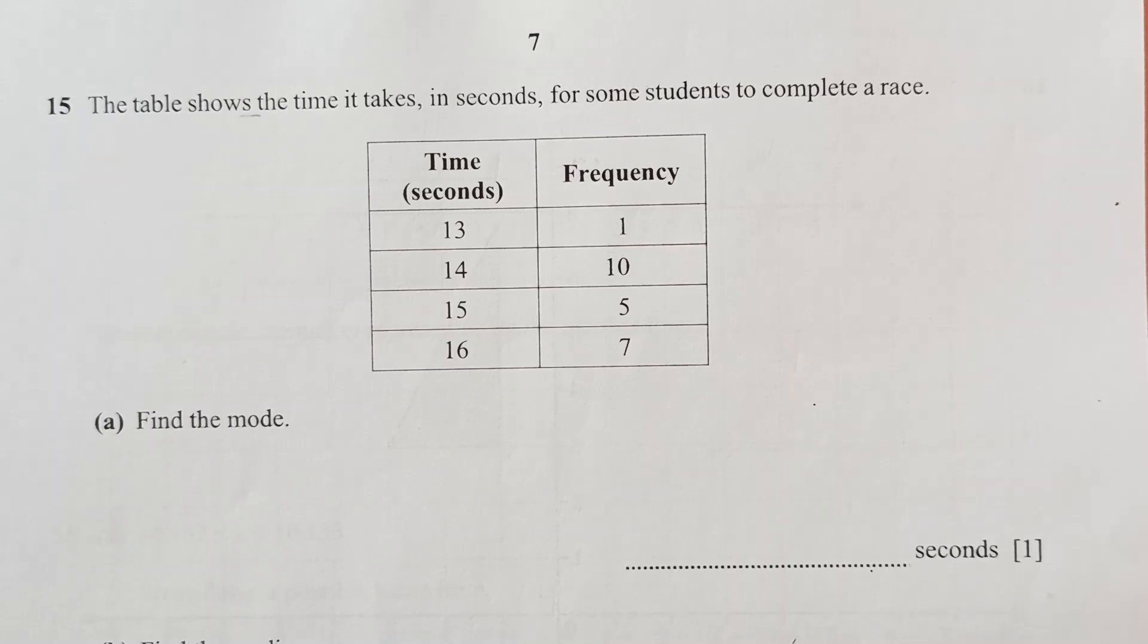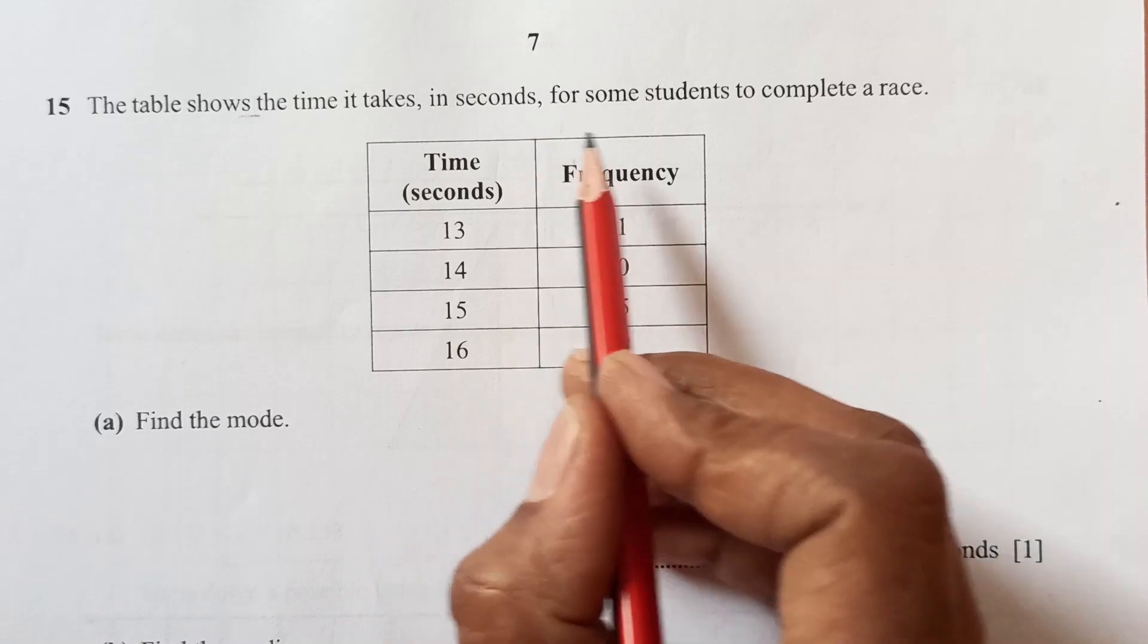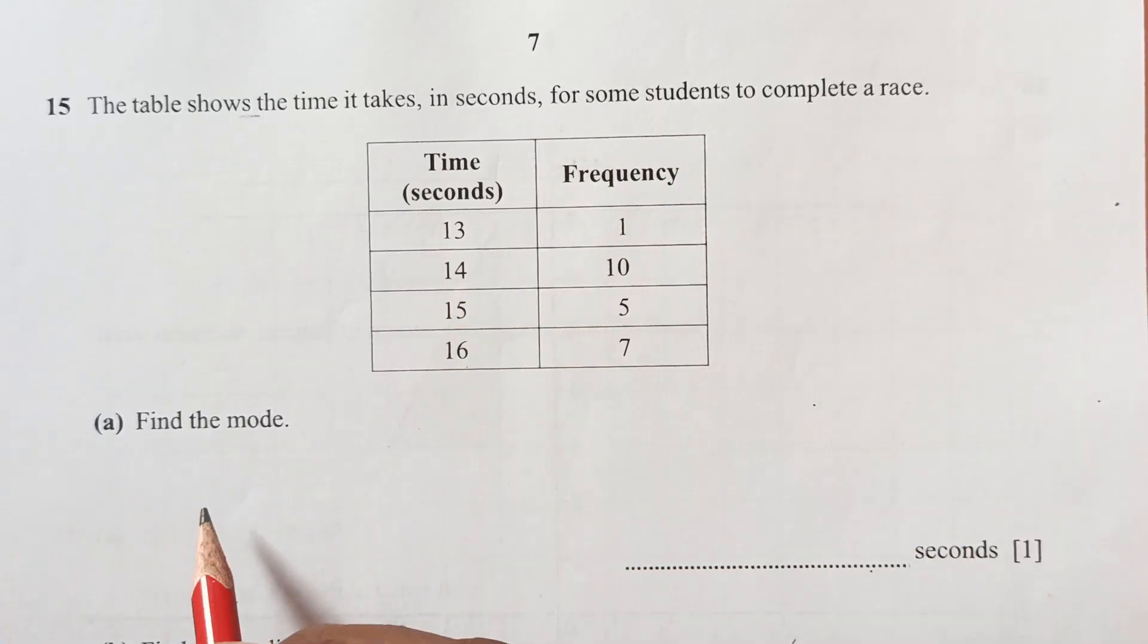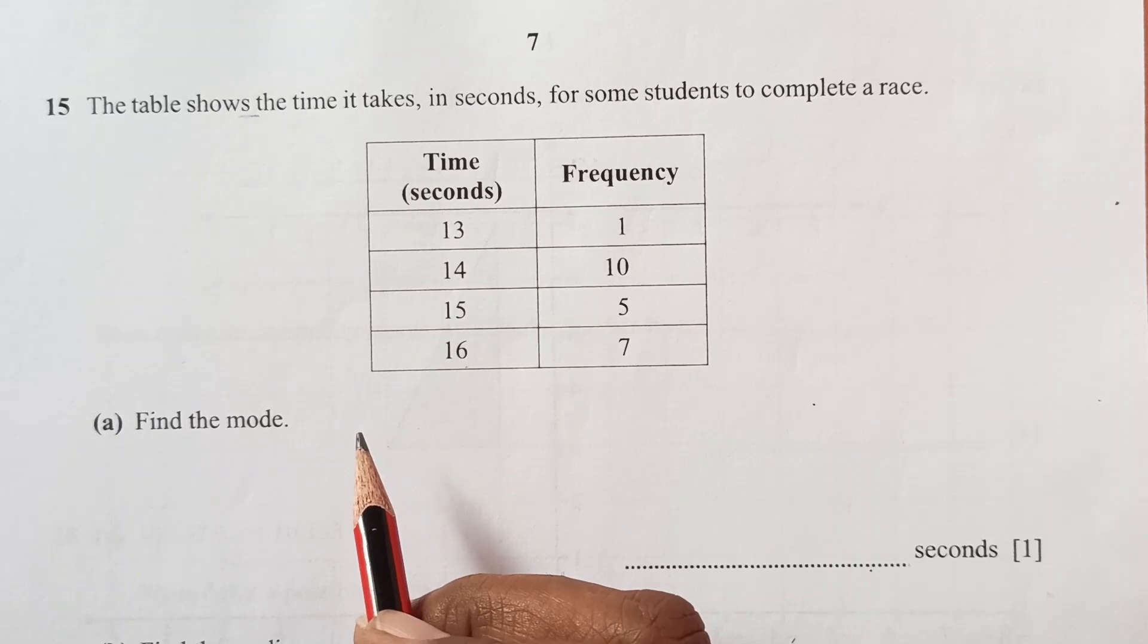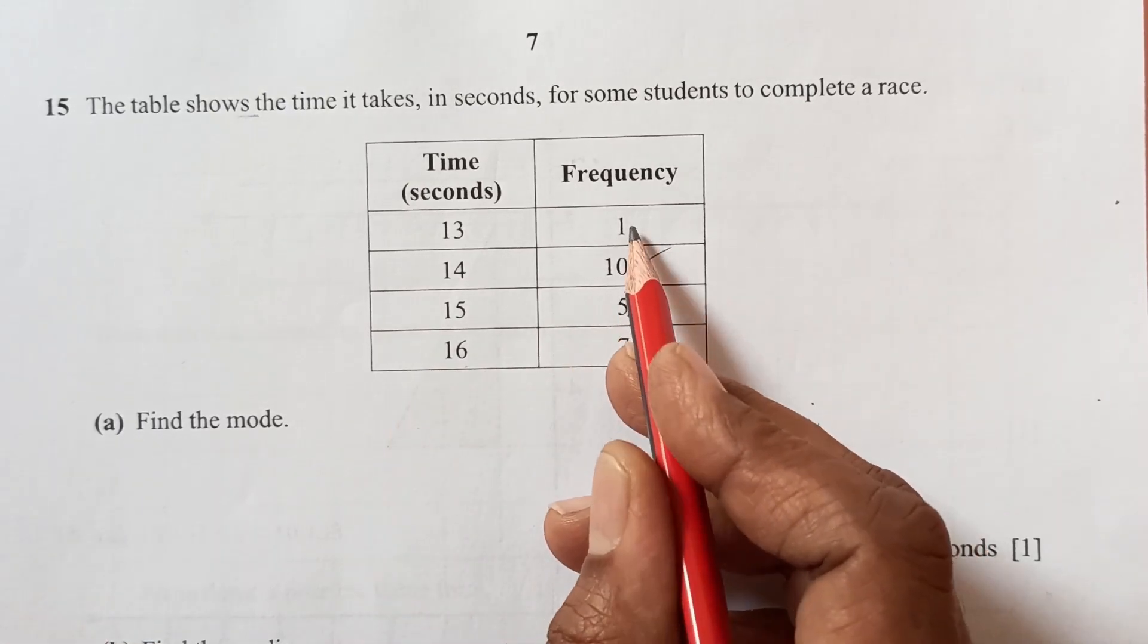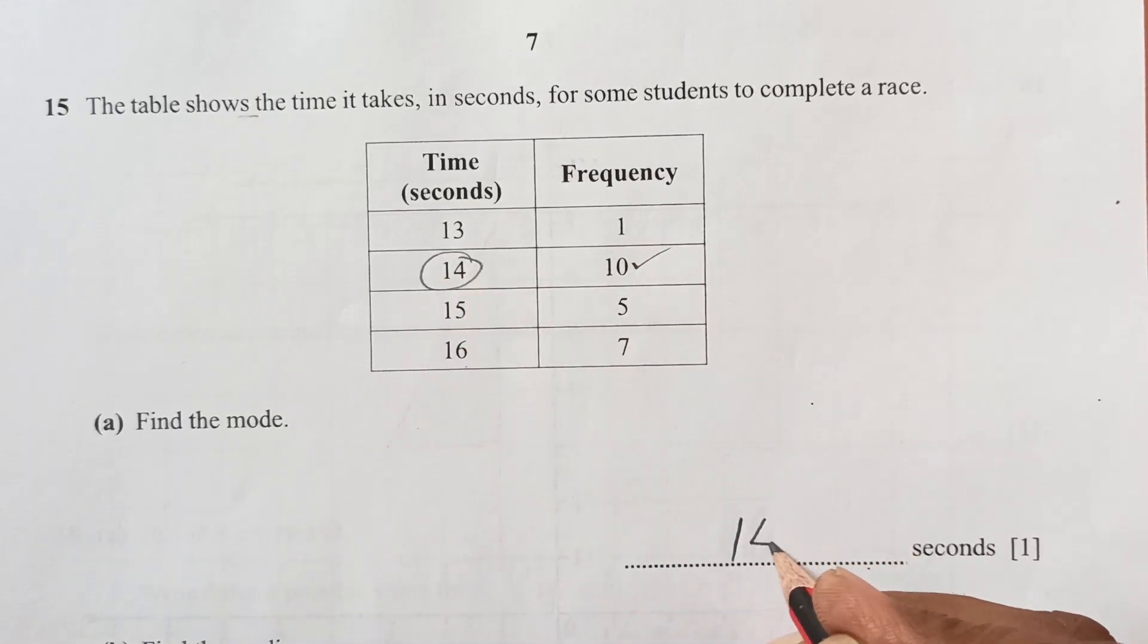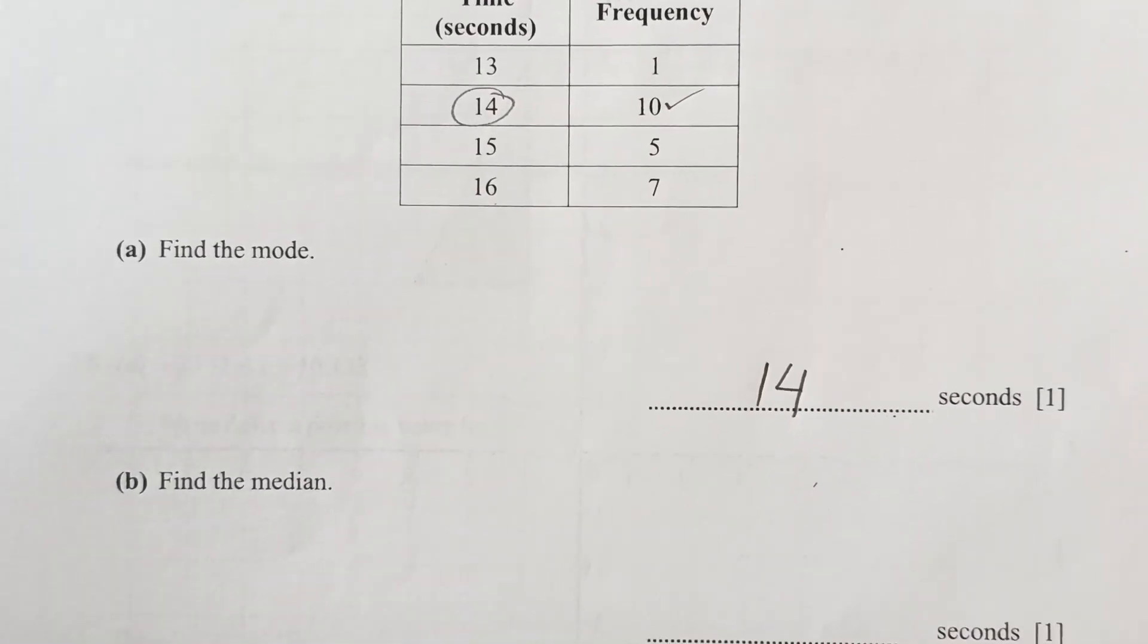Number 15, the table shows the time it takes, in seconds, for some students to complete a race. You see here is time and then we are given frequency. Find the mode. The mode is the one with maximum frequency. Maximum frequency here is 10. You see 1, 10, 5, 7. So mode is going to be 14. So 14 seconds is the most occurred time.